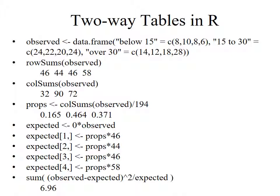This can be done in R in a rather slick way. Here are the commands to calculate this in R. I create a data frame called 'observed'. The first category is below 15, so I create a vector with the values 8, 10, 8, and 6 — those are the counts for freshman, sophomore, junior, and senior who reported less than 15 hours studying. Then for 15 to 30, those numbers were 24, 22, 20, and 24. And for over 30, the numbers were 14, 12, 18, and 28.